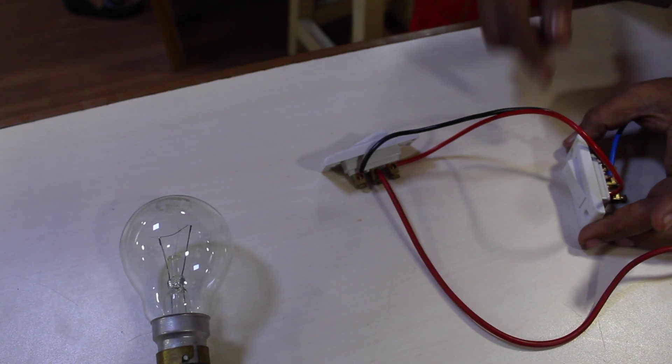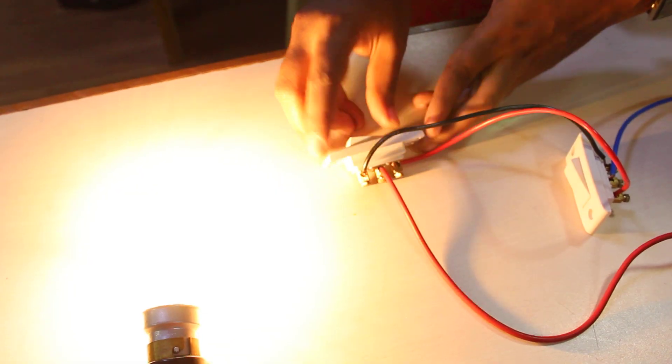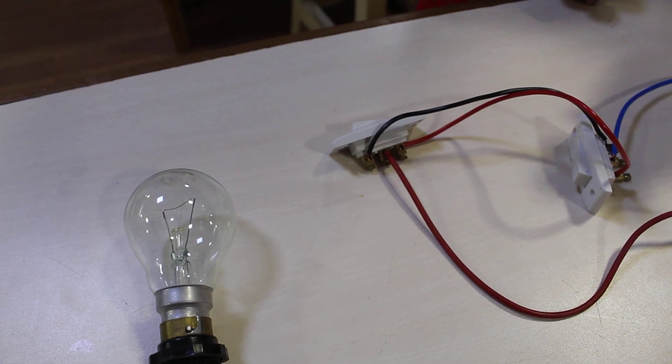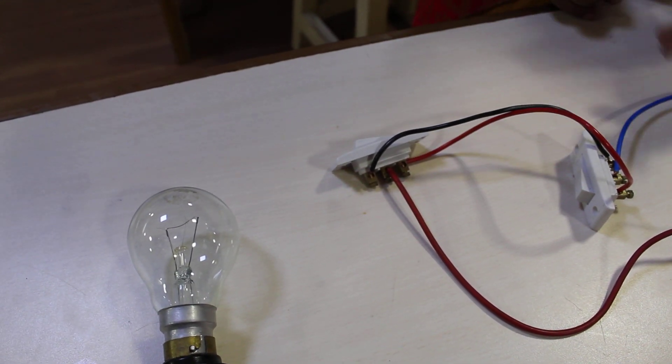Or if the light is already on at the first floor, I can come down and turn off the switch. That is the application of staircase wiring by employing two two-way switches. Thank you very much.